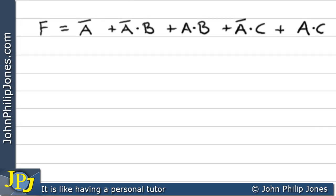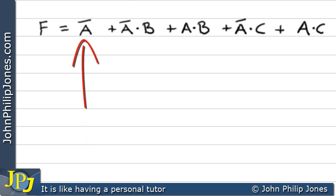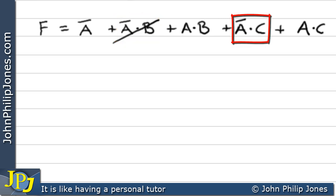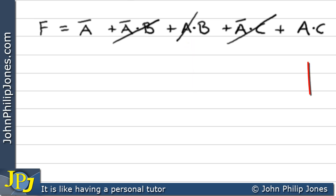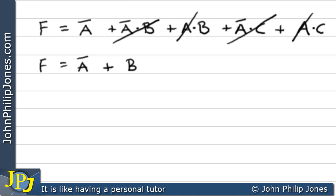In this example, we have NOT A by itself. NOT A will knock out every ANDed term that contains NOT A — we can see two such terms, so those get knocked out. Then we have A AND B, and we just knock the A out, leaving B. The final ANDed term contains A, so that gets knocked out. F minimizes to NOT A OR B OR C.